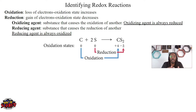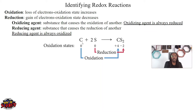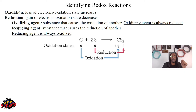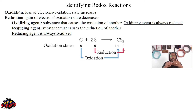Once we identify our oxidation states, we can decide what's being reduced and what's being oxidized. Focusing on carbon, from reactant to product, our oxidation state for carbon goes from zero to plus four. Our oxidation state increased, and if your oxidation state increases, that means you're losing electrons. And if you're losing electrons, you have been oxidized. So carbon has been oxidized here.